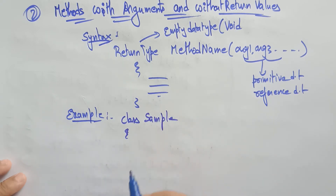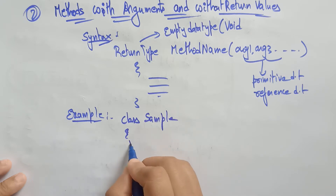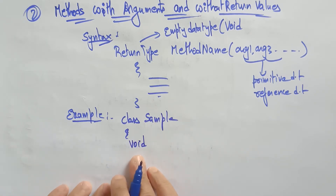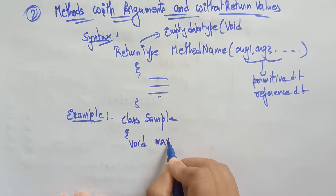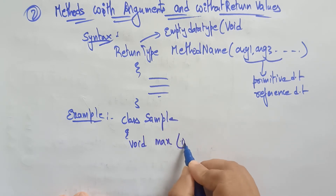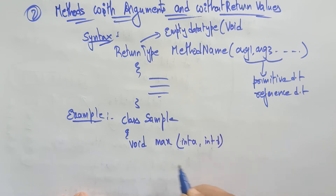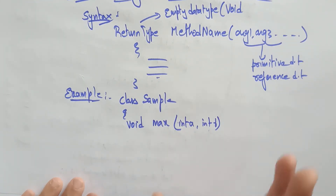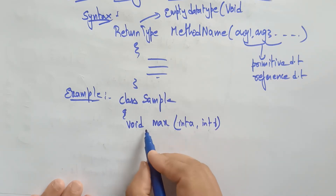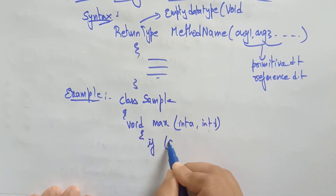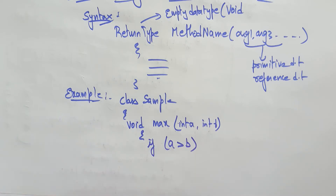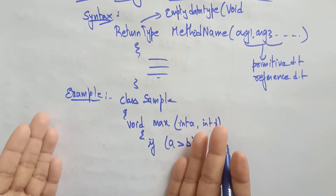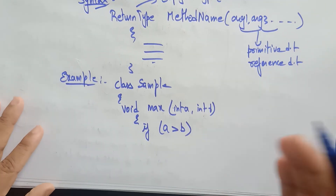Method without return values — without return value means you mention void. Void maximum is the method name, and arguments are int a, int b. Taking the same example — finding which of two numbers is maximum. If a is greater than b, there is no return value. In the previous video I used return a or return b, but here there is no return type.